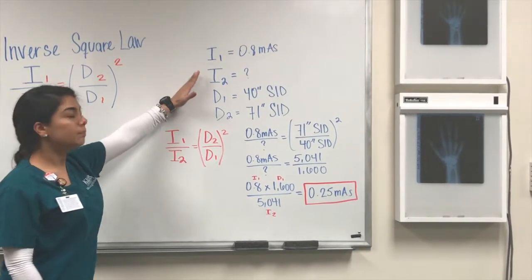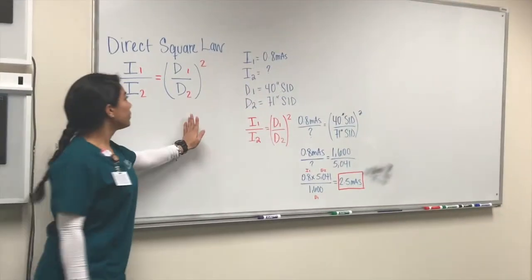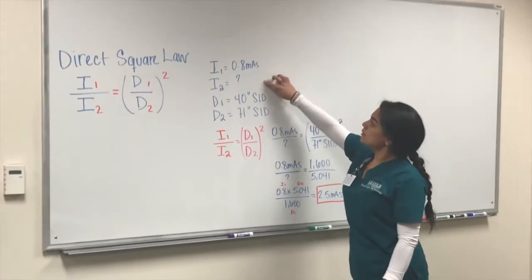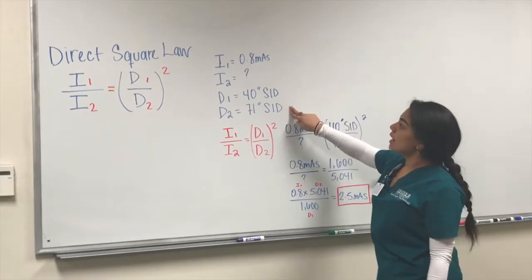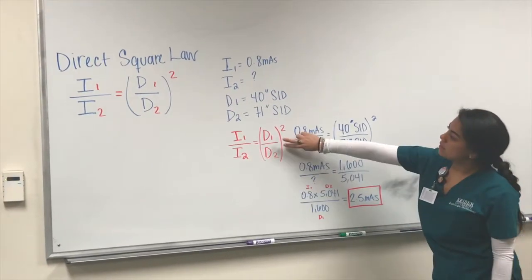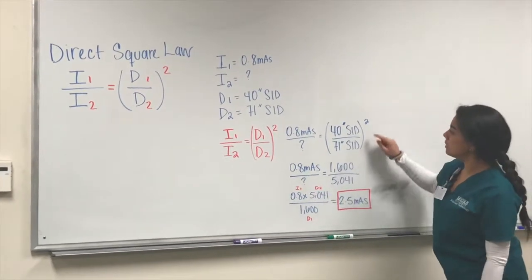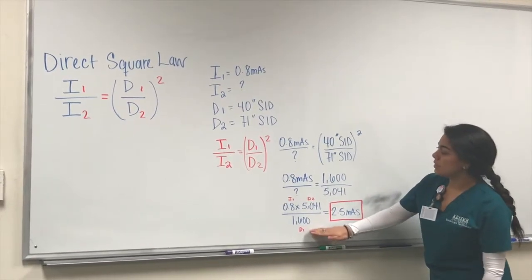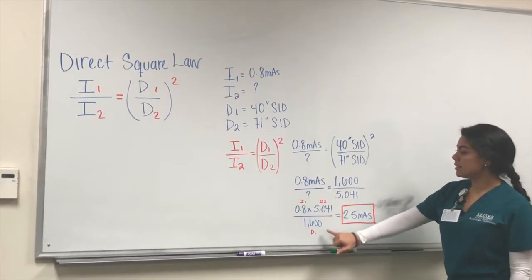Deriving from the inverse square law, we have the direct square law. Here, the first intensity is the same 0.8 mAs, with an unknown intensity, the first distance at 40 inches, and the second distance at 71 inches. We plug it into the formula, and as you notice, this is the inverse: now you have distance one on top and distance two at the bottom. We square and then solve for the second intensity.